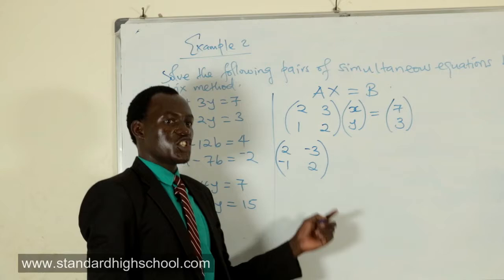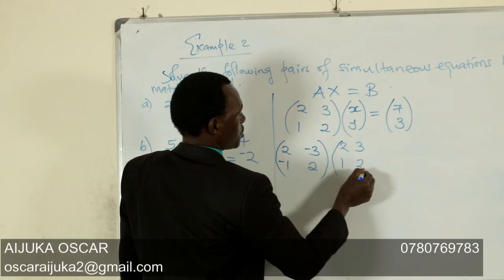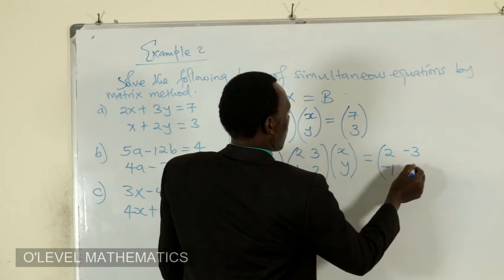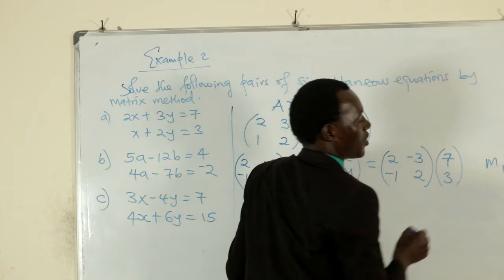It is this adjoint that we multiply both sides of this equation with. When we multiply this, we have this times that: 2, negative 3, negative 1, 2 times the matrix 2, 3, 1, 2 times x, y is equivalent. As I told you, this comes first because the law of multiplication must be maintained. The moment you interchange, this one comes before this, you earn a zero. Once you write this, you will earn your first mark.